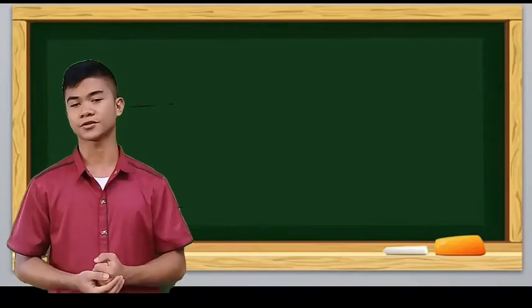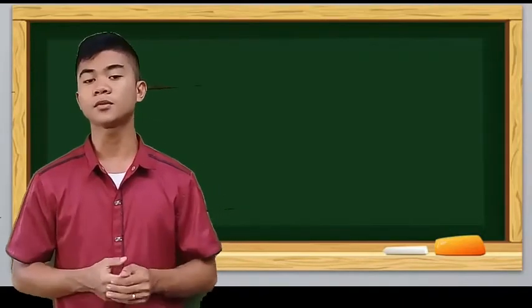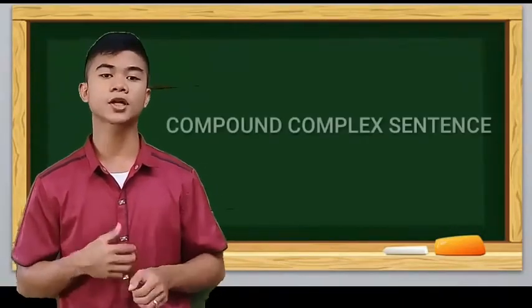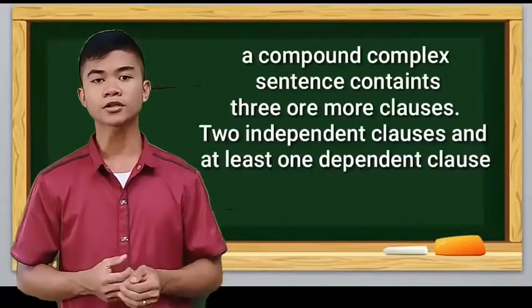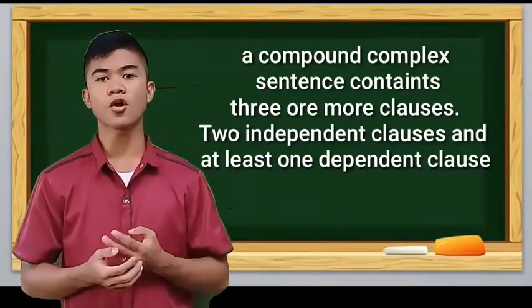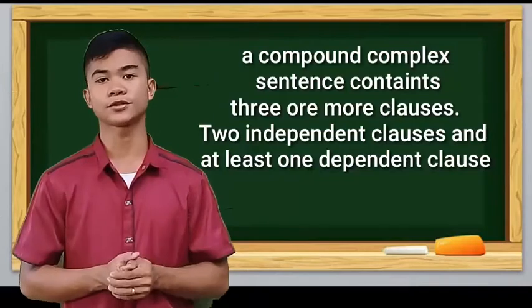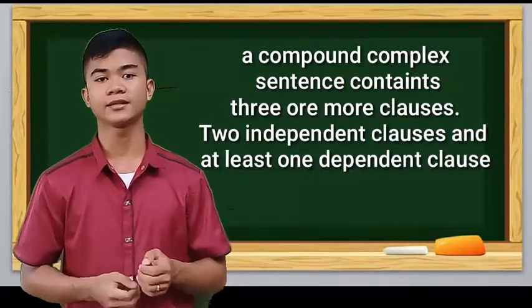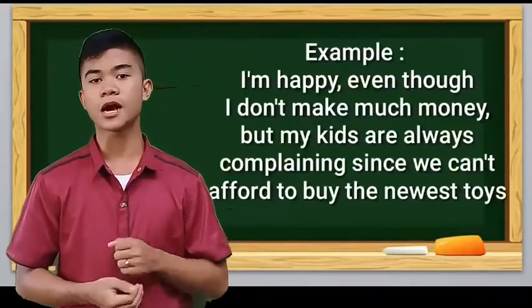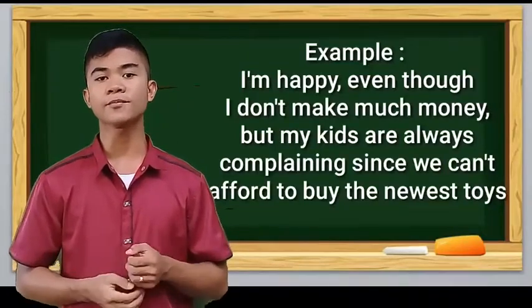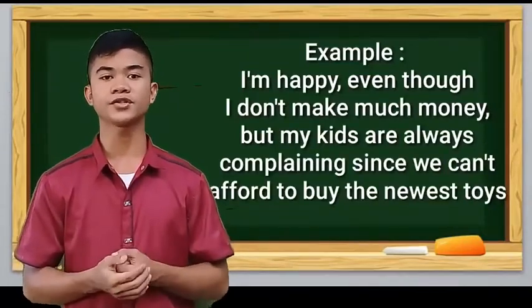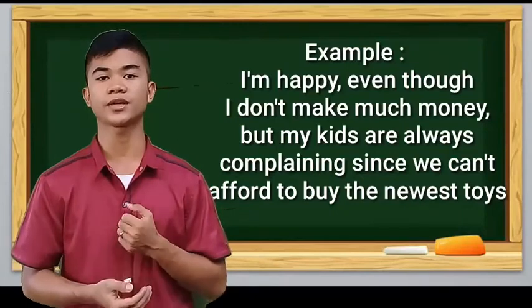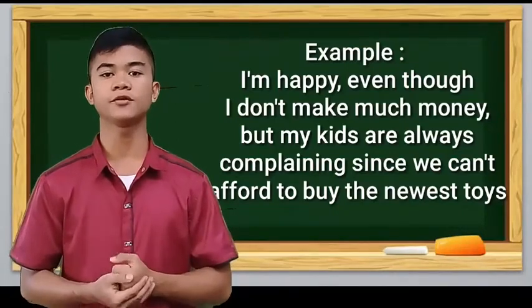And the last form of sentence is the compound-complex sentence. The compound-complex sentence contains three or more clauses: two independent clauses and at least one dependent clause. Example: I'm happy even though I don't make much money, but my kids are always complaining since we can't afford to buy the newest toys.